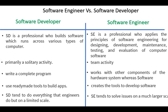Software development is a solitary activity, while software engineering is a team activity. The task of a software developer is to write a complete program, while a software engineer works with other components of the hardware system. Software developers use ready-made tools to build applications, while software engineers should create the tools to develop software. Software developers tend to do everything that engineers do, but on a limited scale, while software engineers tend to solve issues on a much larger scale.